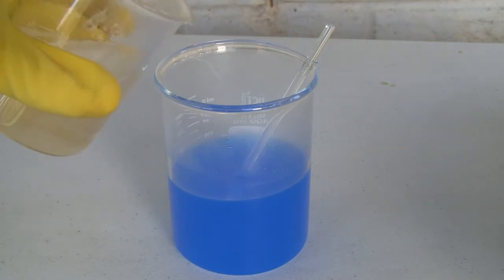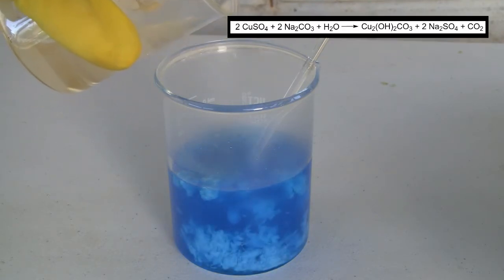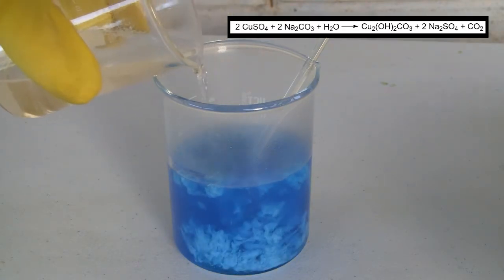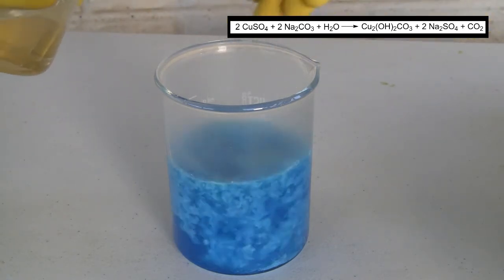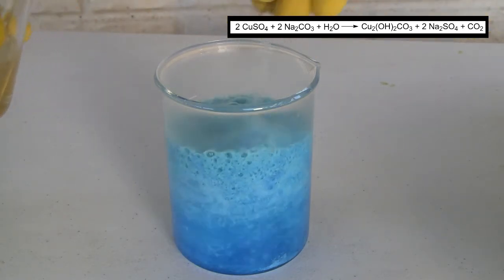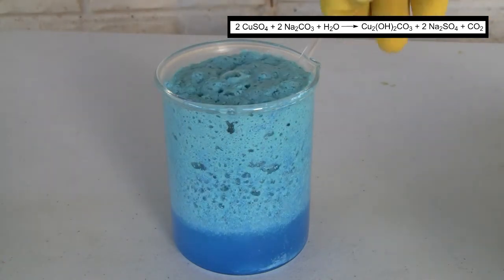Once dissolved, the copper sulfate solution is removed from heat and the sodium carbonate solution is added in small portions. The following reaction takes place when the sodium carbonate solution is added to the copper sulfate solution. The basic copper carbonate precipitates out as a greenish-blue solid while the sodium sulfate stays in solution and carbon dioxide is released as a gas.